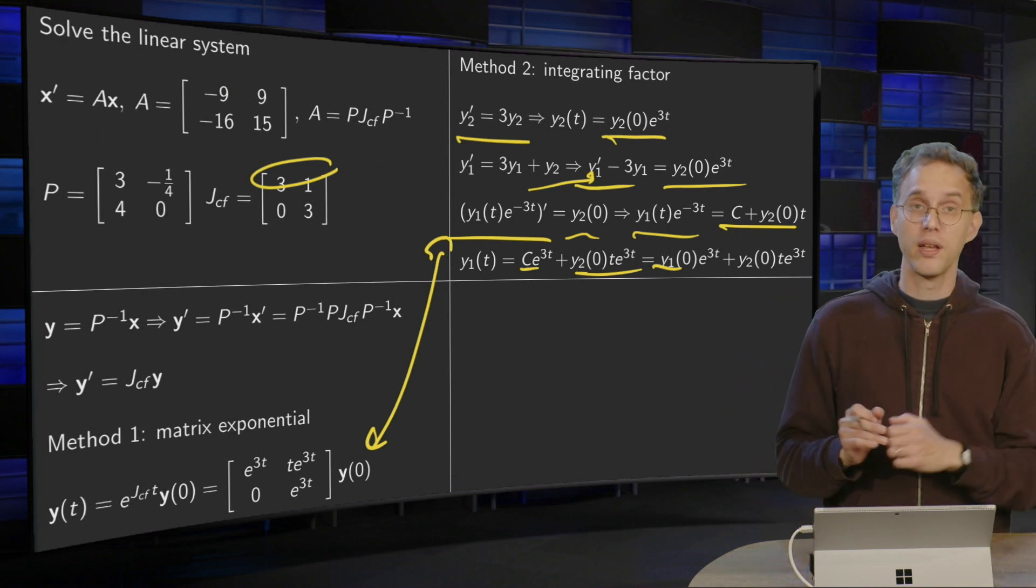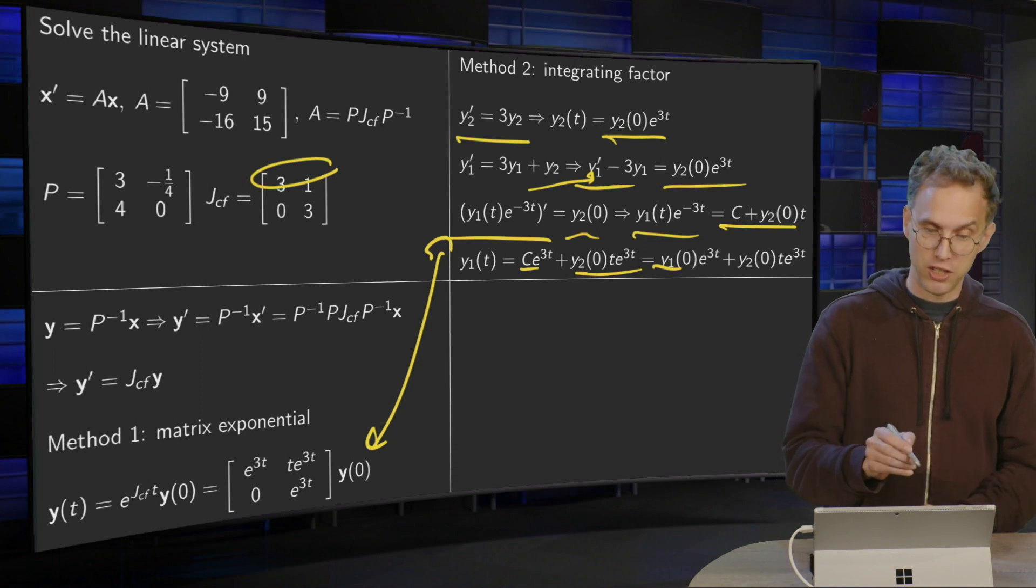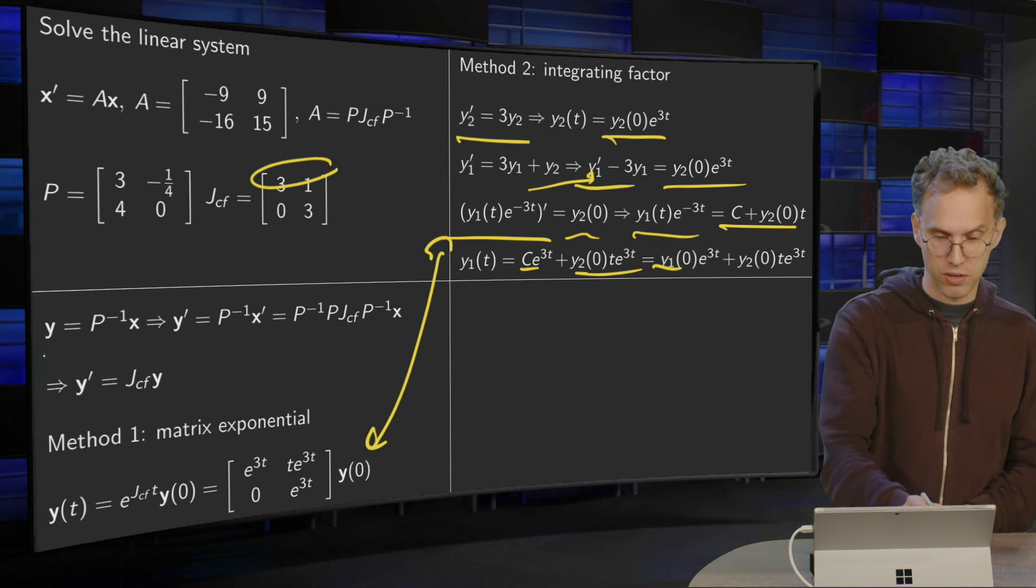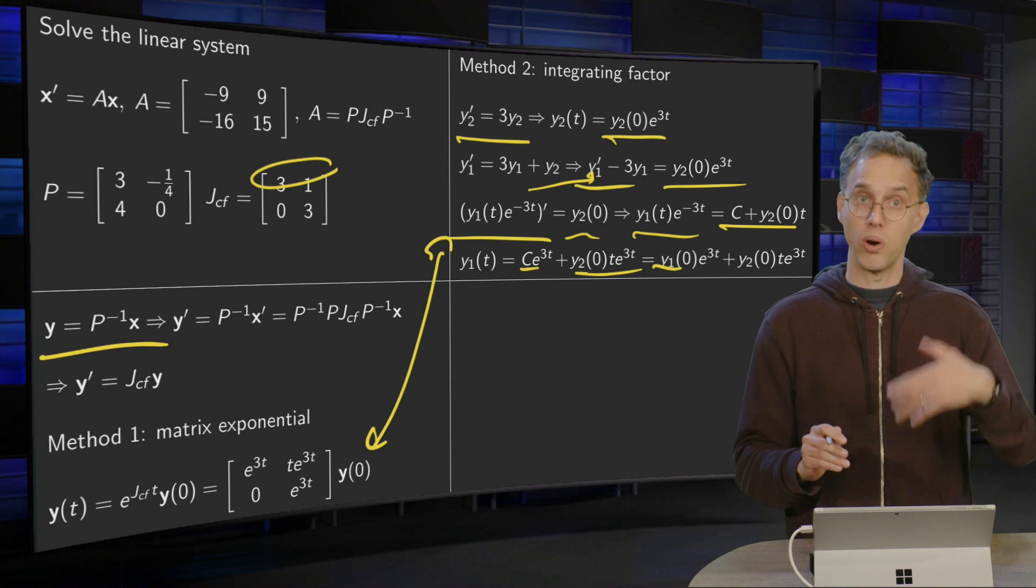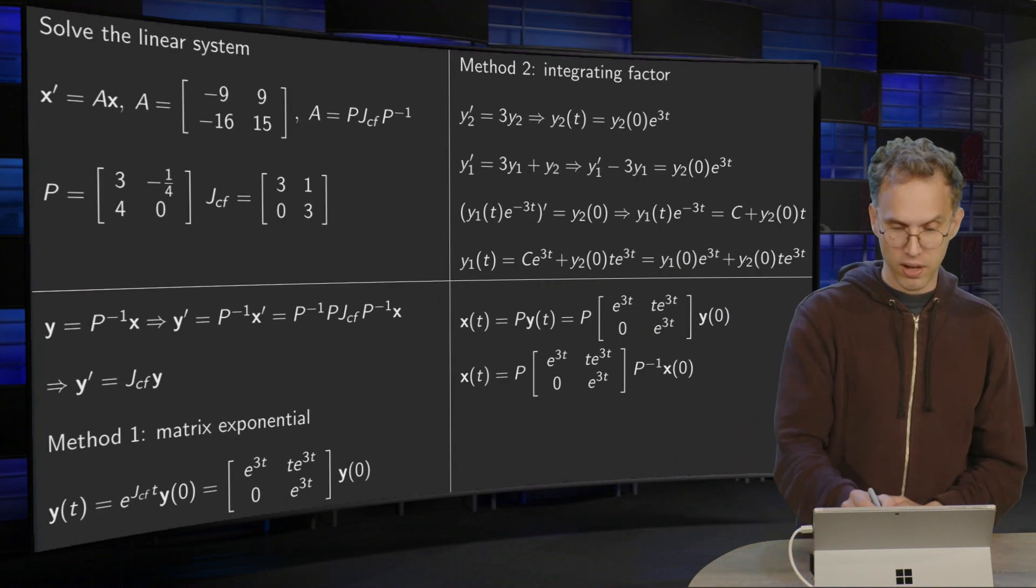Now we have our y. But once we have our y, it's easy of course to find the x. Because y equals P inverse times x, or x equals P times y. So there we go. x equals P times y.